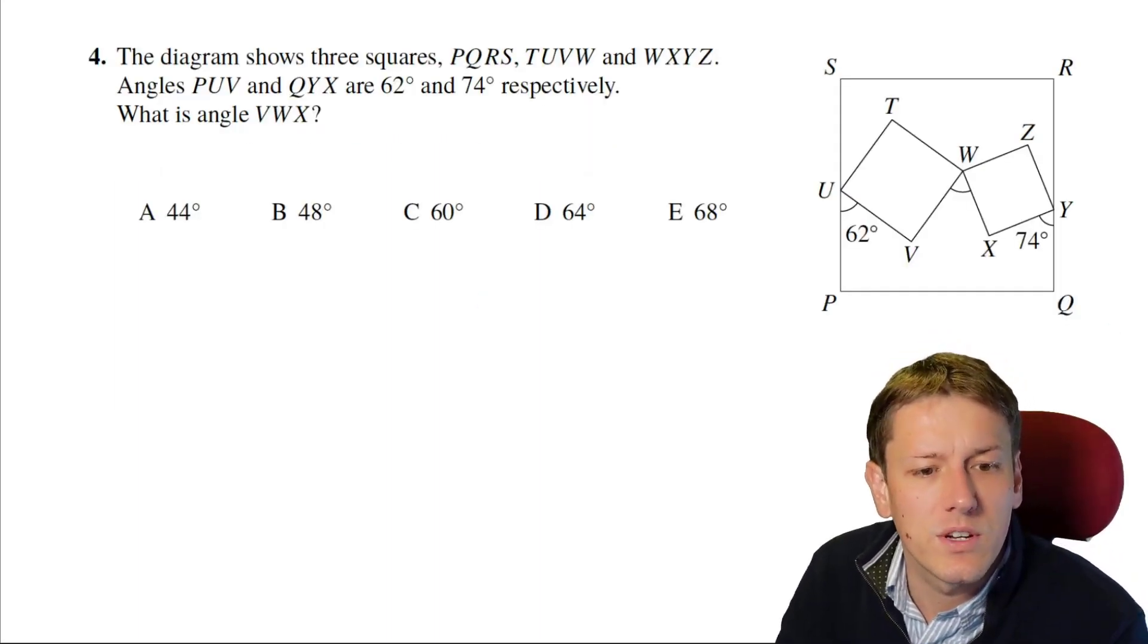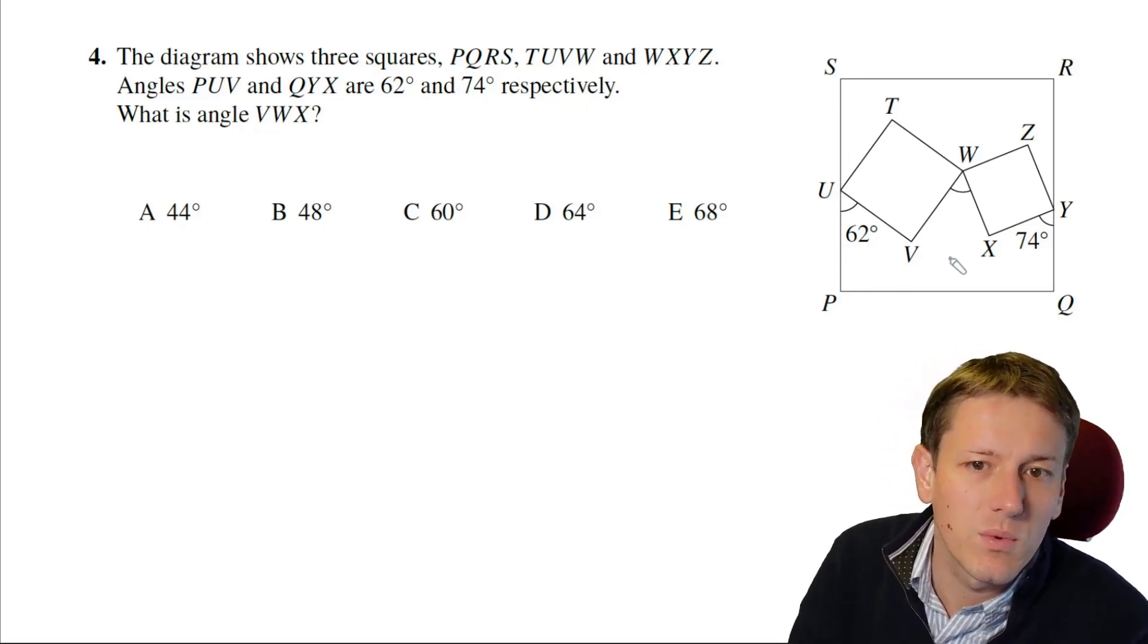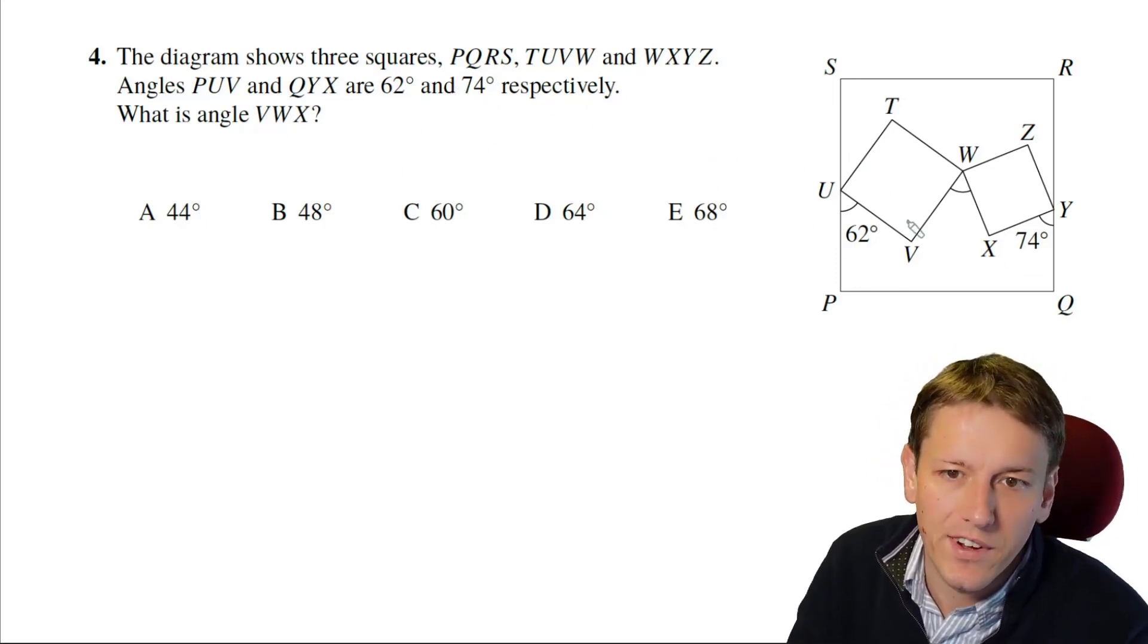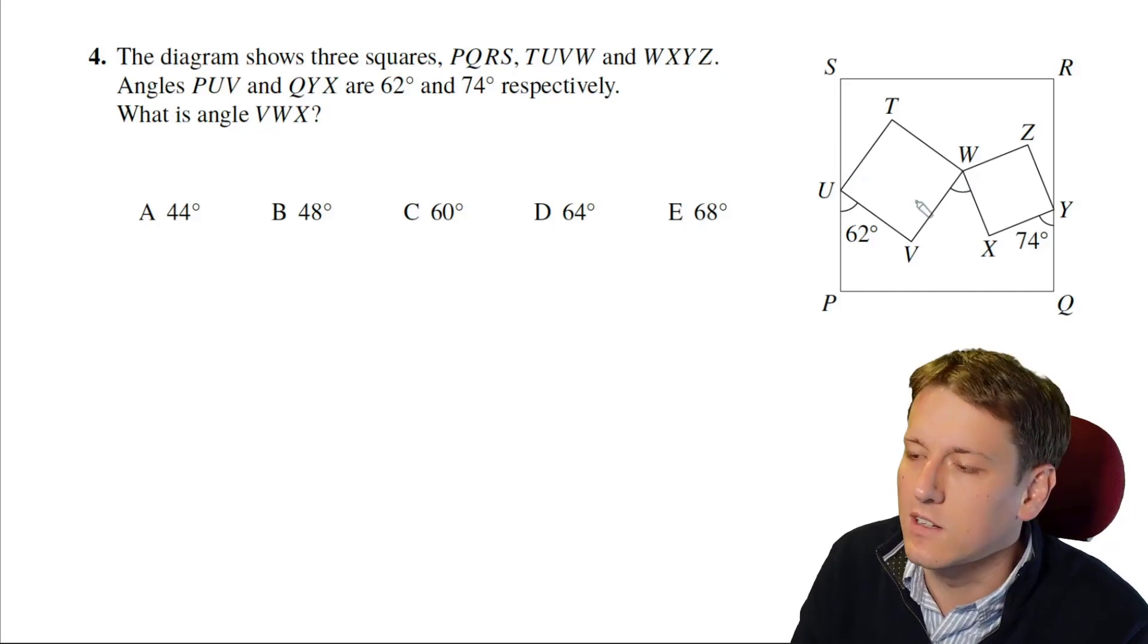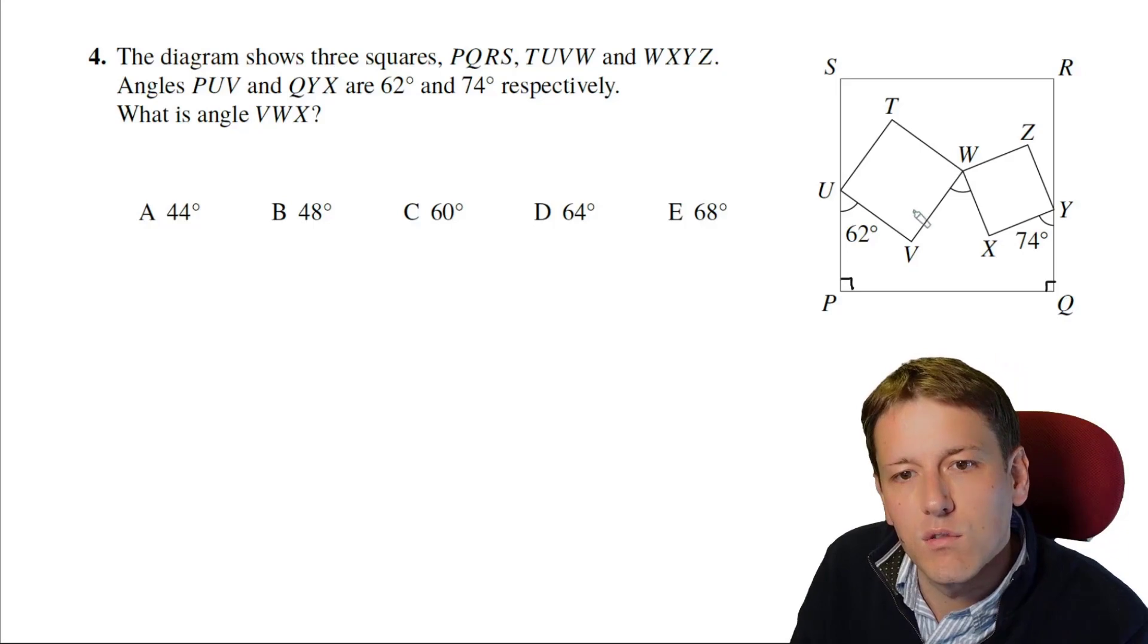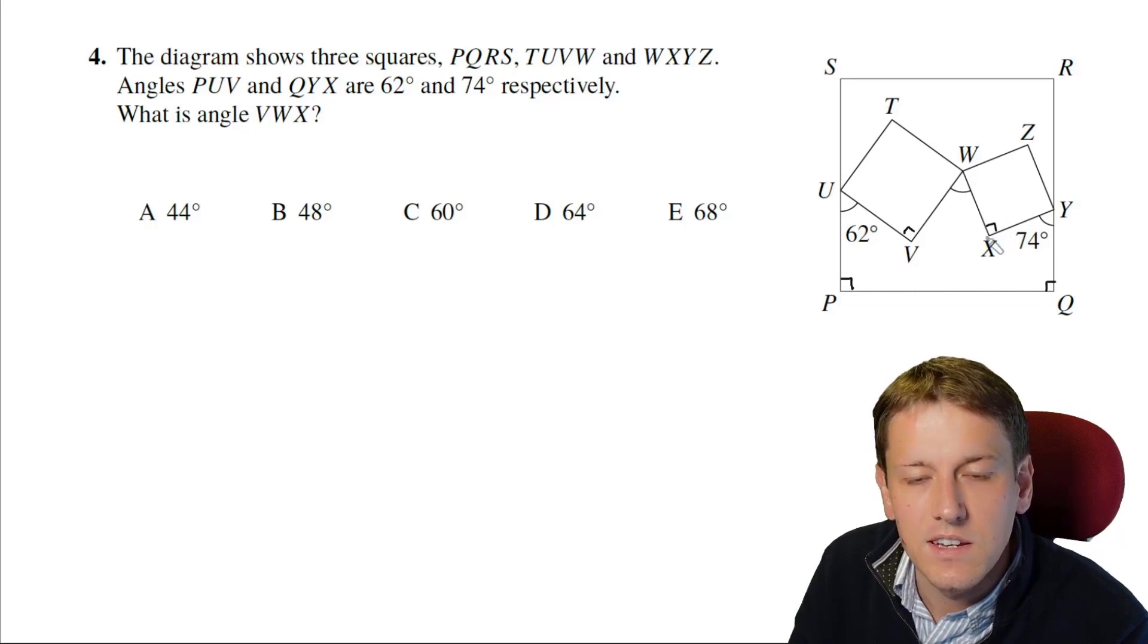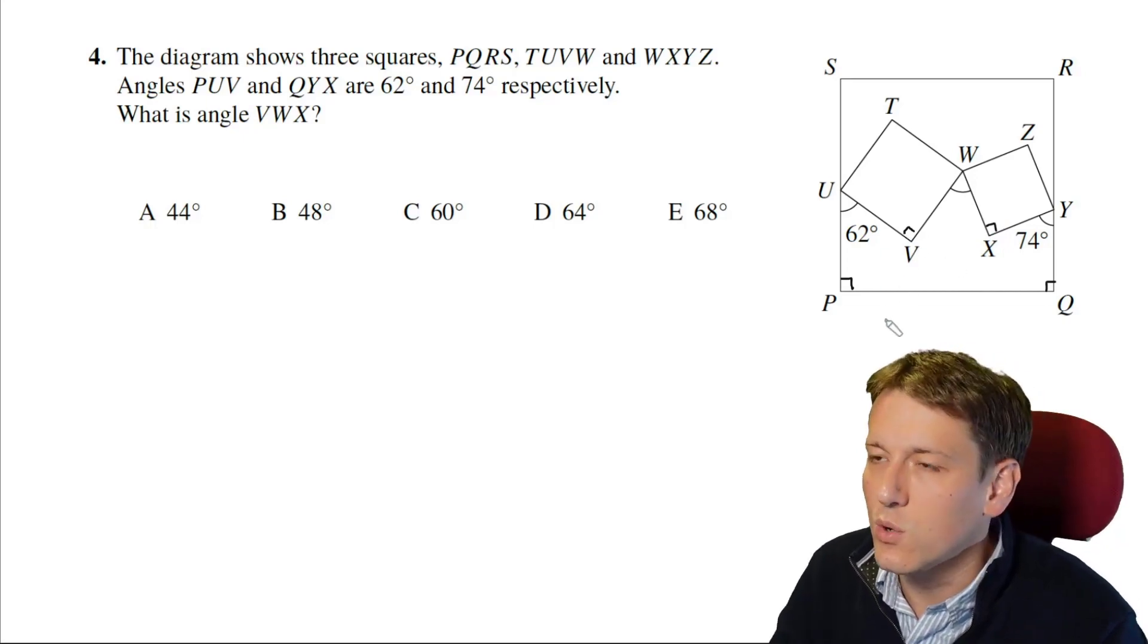There are a couple of ways you could do this question. Basically, the question just says we've got a diagram as shown with the angles marked as shown, and we want to find VWX, which is this one in the middle. The key is, because we've got squares, we know that these are right angles. Here, here, here, and here. There's more right angles, but these are the only ones we're going to need to use. So you've got a couple of options.